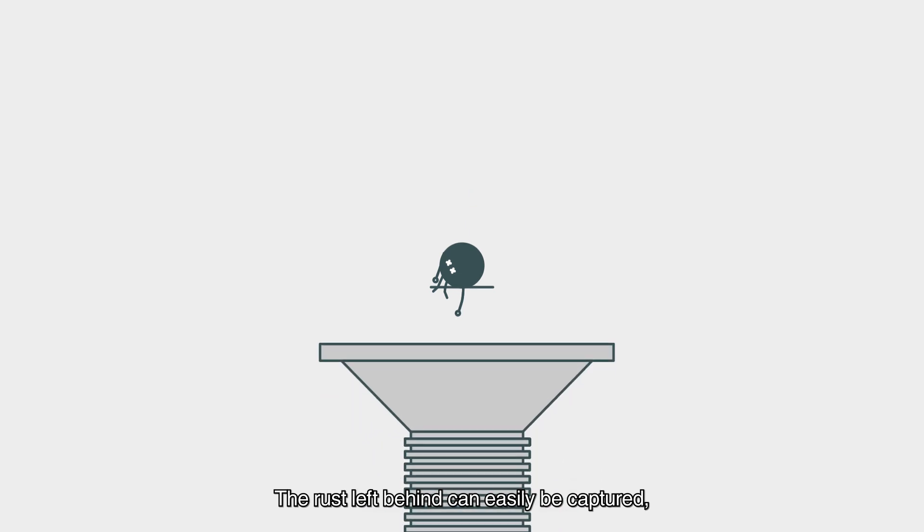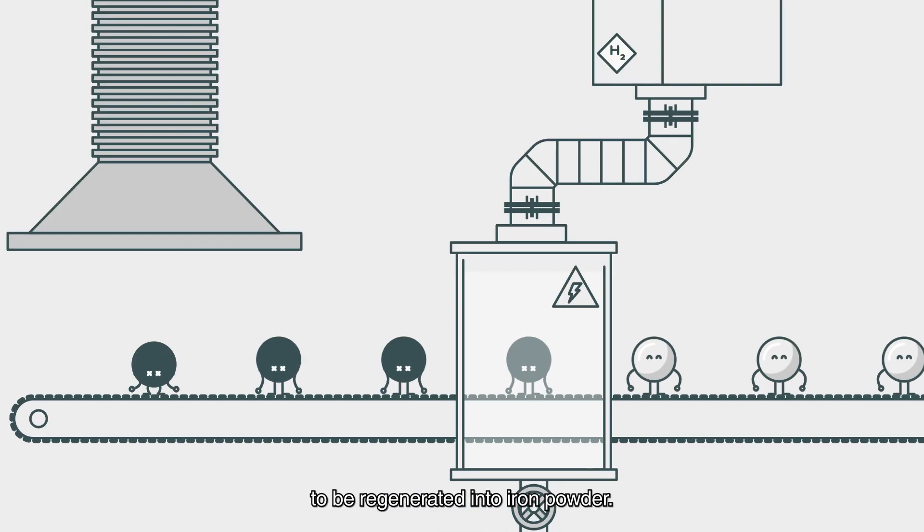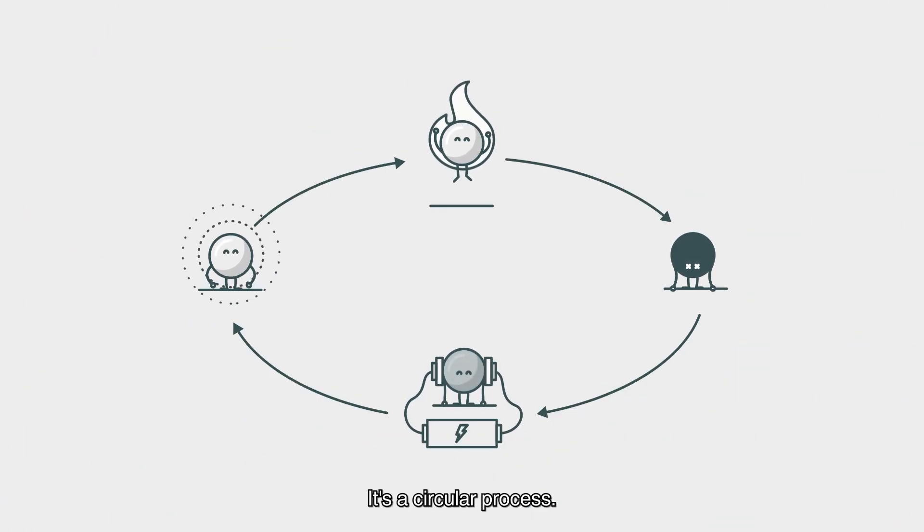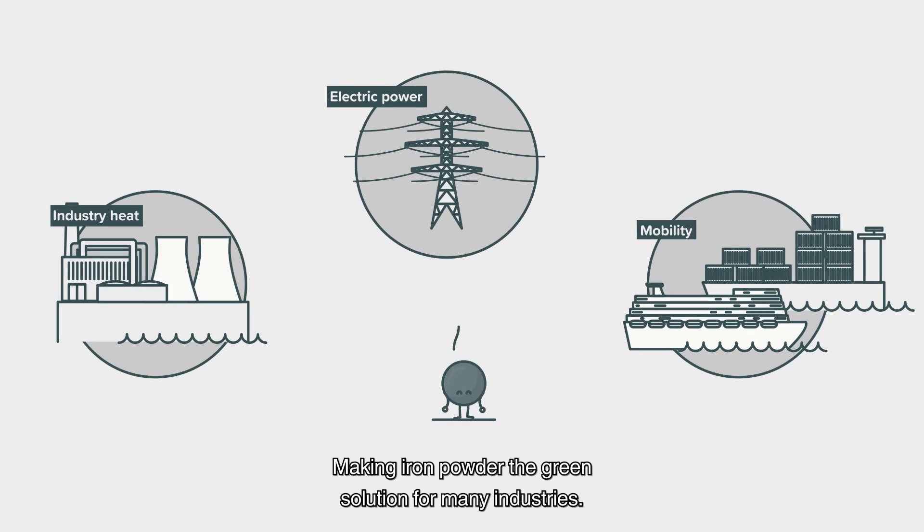The rust left behind can easily be captured to be regenerated into iron powder by using solar or wind energy. It's a circular process, making iron powder the green solution for many industries.